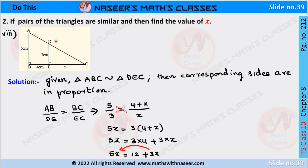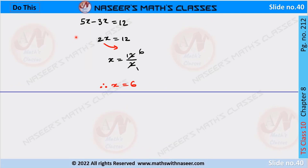Problem: two similar triangles ABC and DEC are given. We have to find the value of x. We already know that if two triangles are similar then their corresponding sides are in the same ratio. So we can write AB by DE is equal to BC by EC. Now we substitute the given values: 5 by 3 is equal to 4 plus x by x. After cross multiplication, 5 into x is equal to 3 into 4 plus x. Applying the distributive law: 3 into 4 plus 3 into x. After simplification, 5x is equal to 12 plus 3x. So 5x minus 3x is equal to 12, giving 2x is equal to 12. Transpose 2 from LHS to RHS: x is equal to 12 by 2, therefore we get x is equal to 6.